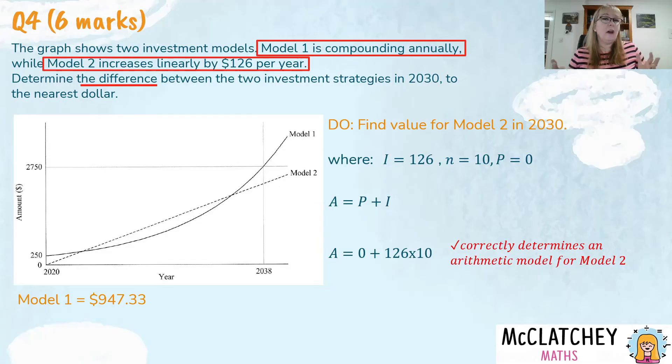Now, if you use the other way of doing it through sequences, you would have been using an arithmetic model using term one plus the common difference, et cetera. But this case here, we're just focusing on A equals P plus I. And that comes to $1260. So now we've got an amount for model two. And that was our fourth mark coming up with an amount for both models. So if you missed one of the models, you didn't get the mark at all. And there's no half marks on these papers. So you need to come up with an amount.